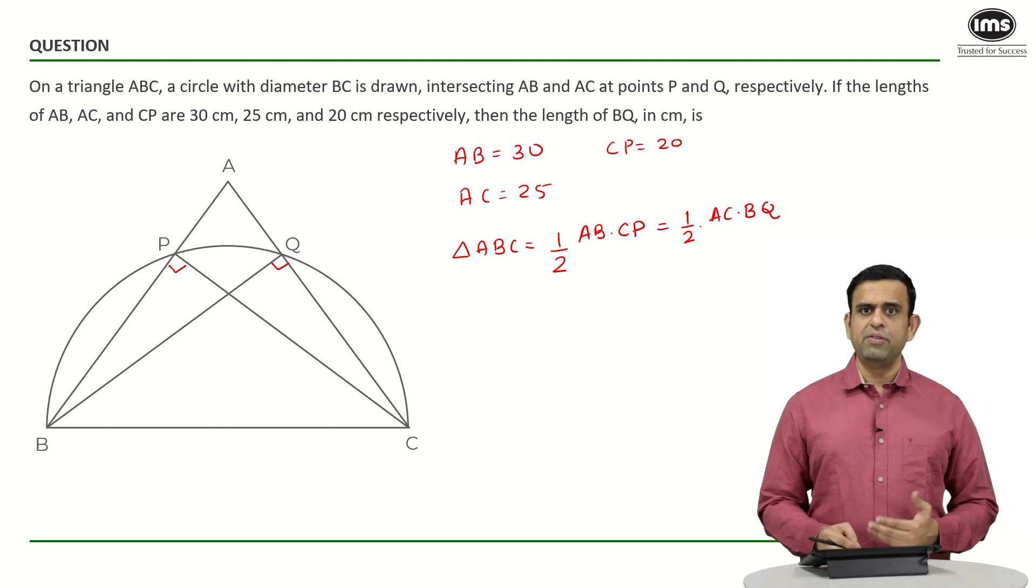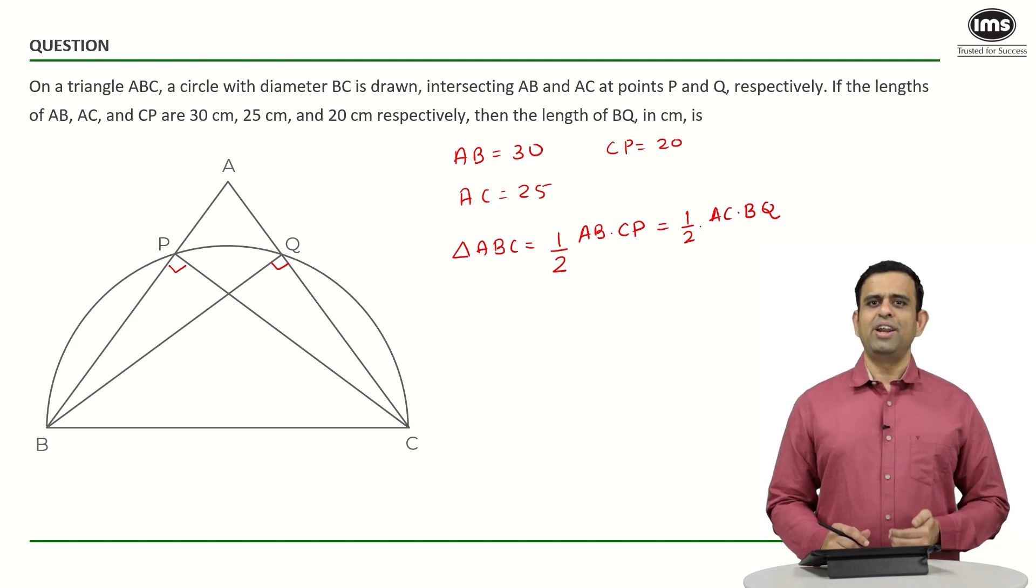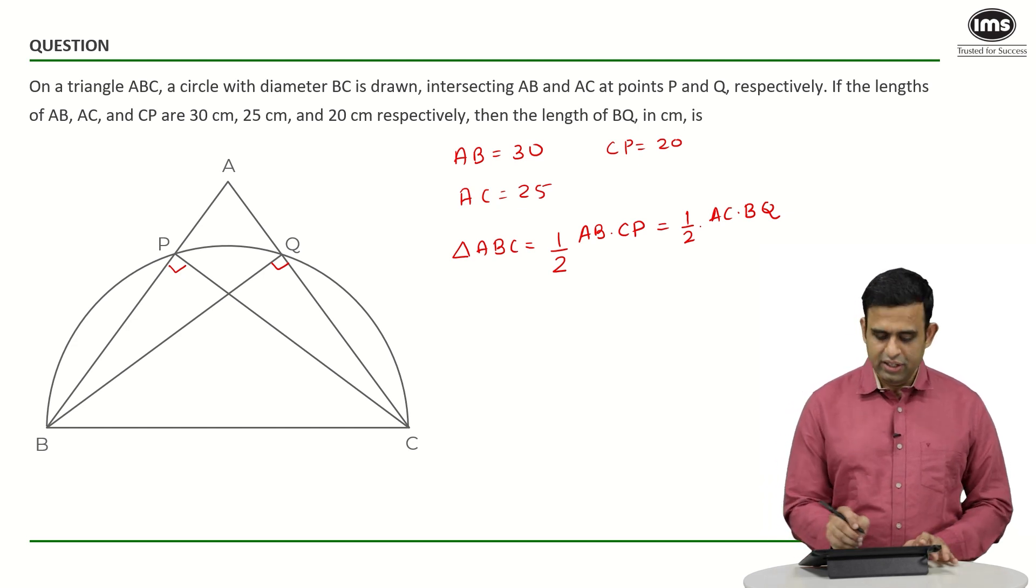If I put the value, you can see here we have four variables: AB, CP, AC, and BQ. And out of four, if I know three of them, I can definitely find out the fourth one pretty easily.